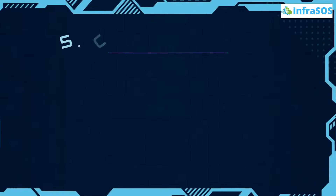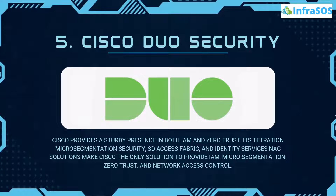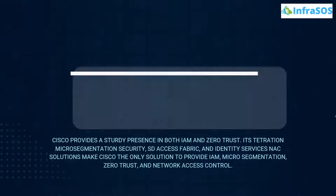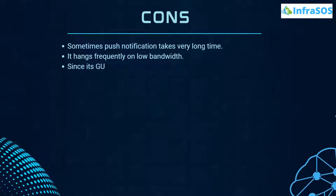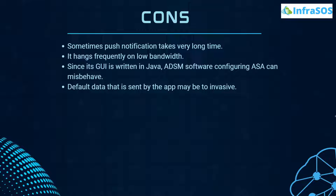At number 5 we have Cisco Duo Security. Cisco provides a sturdy presence in both IAM and Zero Trust, with micro-segmentation security, SD Access Fabric, and Identity Service solutions — making Cisco the only solution to provide IAM, micro-segmentation, Zero Trust, and network access control all at the same time. Pros include fast MFA with almost no delay, a CLI that is effortless to use, and the ability to add a simple four-digit passcode to authentication requests. Cons include push notifications sometimes taking a very long time to appear, frequent hanging on low bandwidth, and Active Directory Software Configuration or ASA misbehaving since the GUI is written in Java.